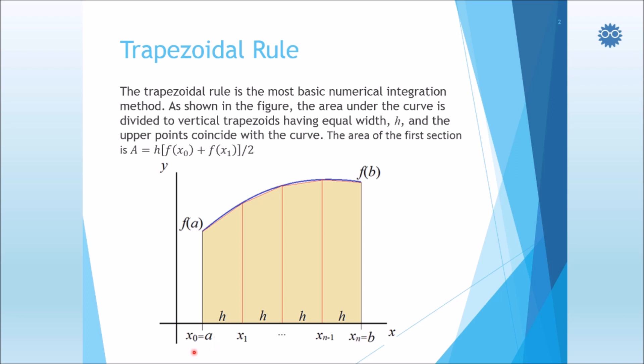So we have integration points from x sub 0, which is equal to a, the lower limit of the integration, up to x sub n, which is equal to b, the upper limit of the integration, where n is the number of the divisions.